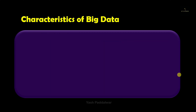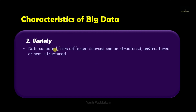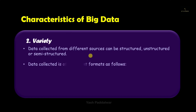Moving on to Variety — data collected from different sources can be structured, unstructured, or semi-structured. We will cover these terms in detail in upcoming videos. For now, structured data is data that is ready for modeling and analyzing. Unstructured data is very scattered and cannot be used directly for analyzing or reporting. Semi-structured data lies in between structured and unstructured.